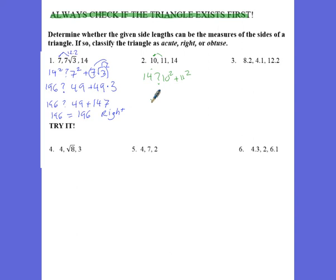Well 14 squared is 196. 10 squared is 100. 11 squared is 121. When we add these together, 100 plus 121 is 221.